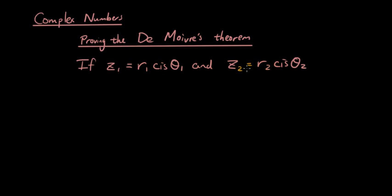and the argument is denoted by θ1 and θ2, then z1 times z2 is equal to r1 times r2 cis bracket θ1 plus θ2.